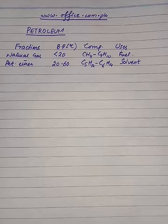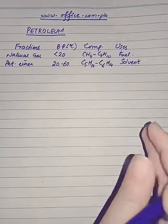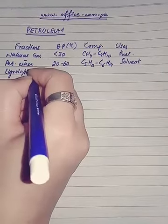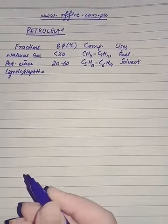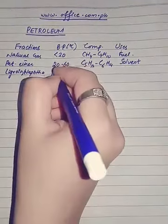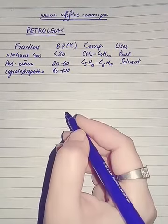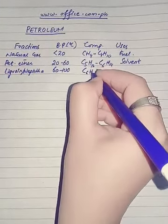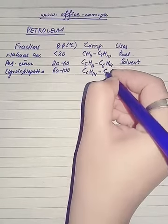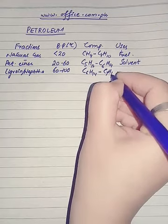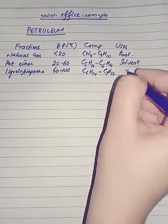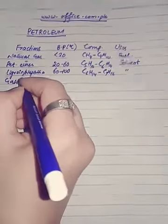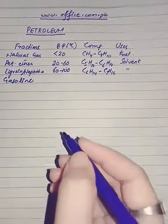The third fraction has a boiling point temperature range of 60 to 100 degrees centigrade and it mostly contains compounds from carbon 6 and carbon 7. This fraction is also used as a solvent and as a raw material to make other compounds.